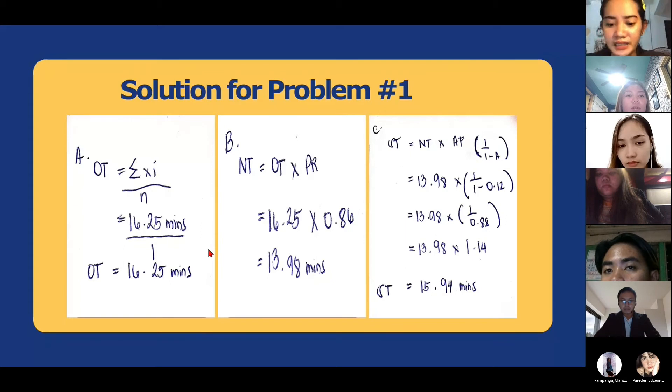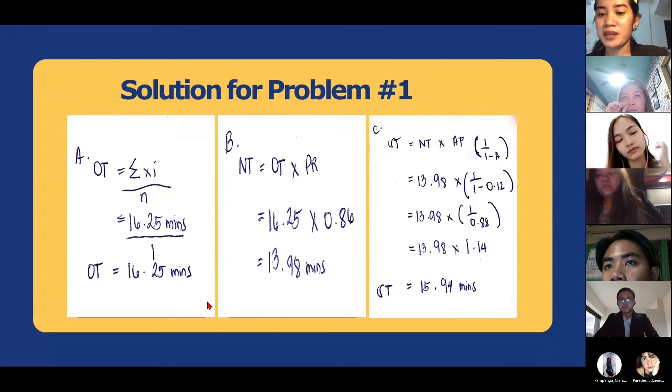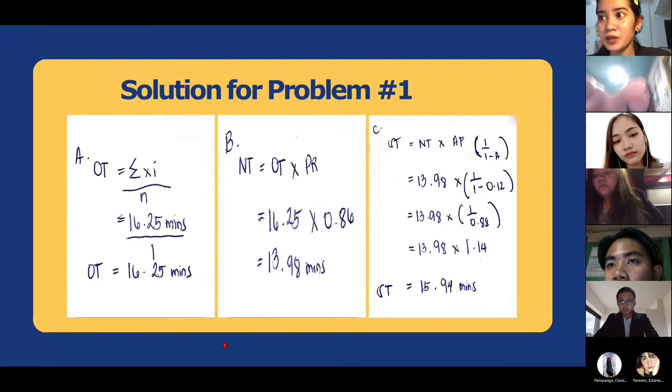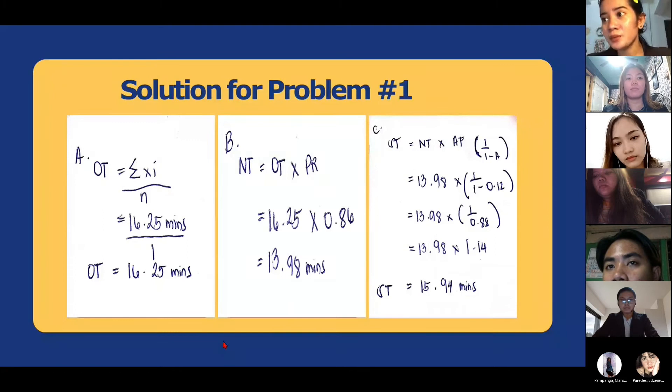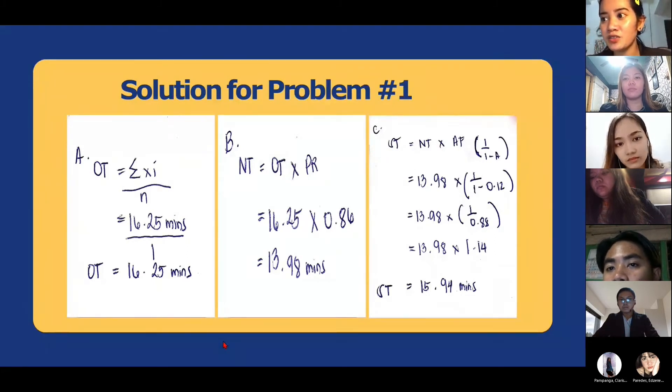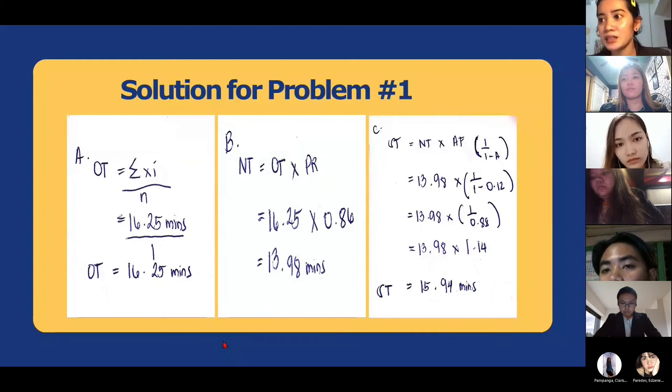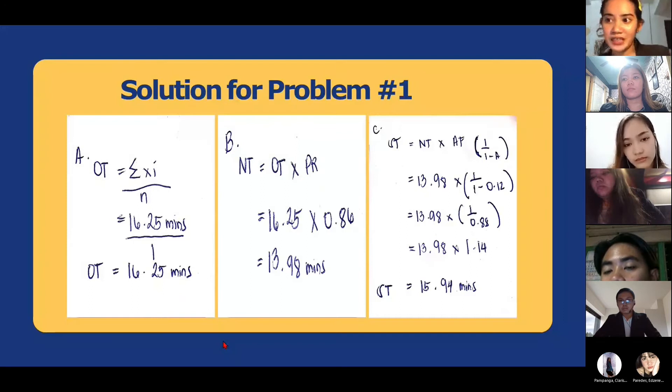Letter C. Normal time times allowance factor: 1 over 1 minus A. 13.98 times 1 over 1 minus 0.12. 13.98 times 1.14 is equal to 15.94 minutes.